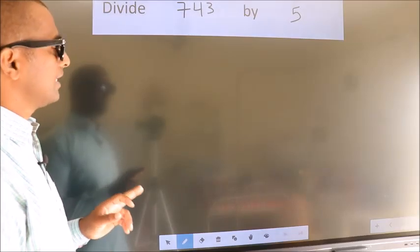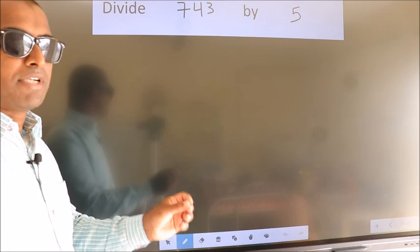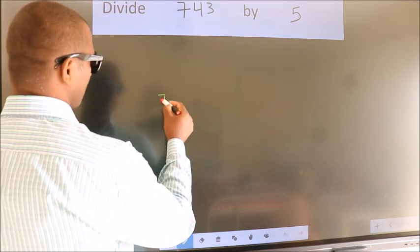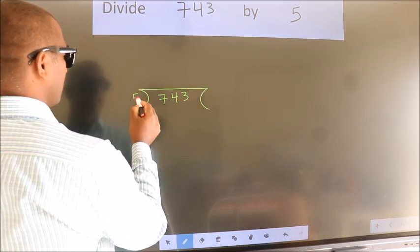Divide 743 by 5. To do this division we should frame it in this way. 743 here, 5 here.